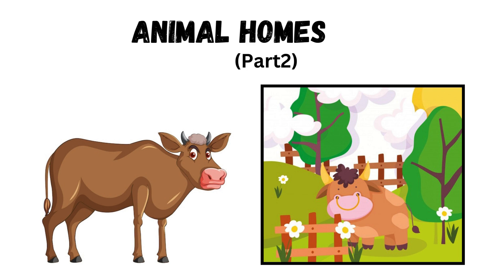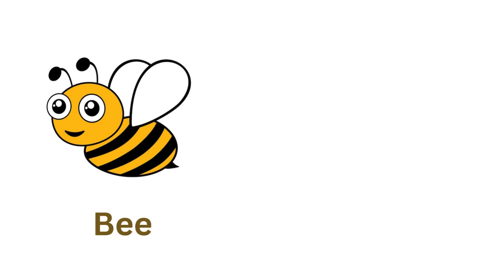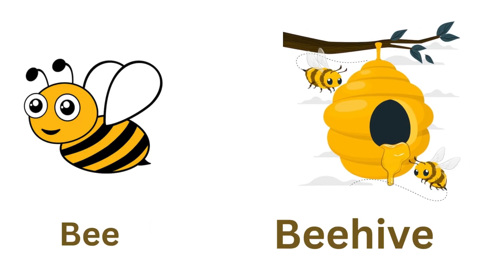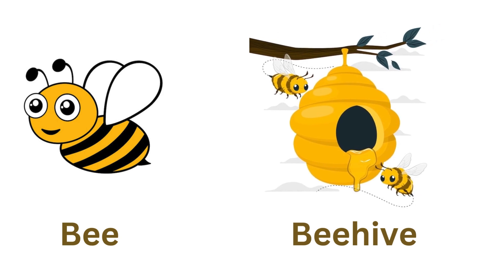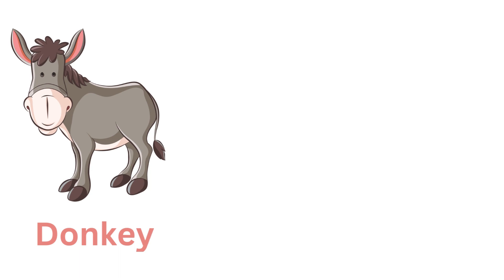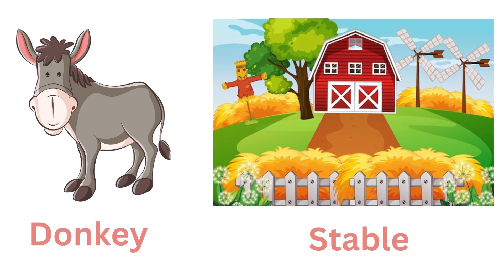Hello kids! Today we will learn animals and their homes. Some animals live on land, some animals live in water, and some animals live in trees. Let's see one by one. Bee — bee lives in a beehive. Donkey — donkey lives in a stable.